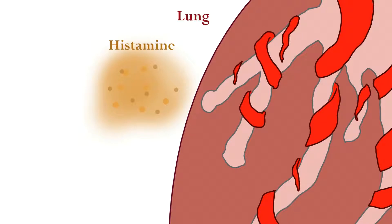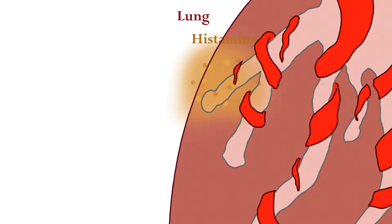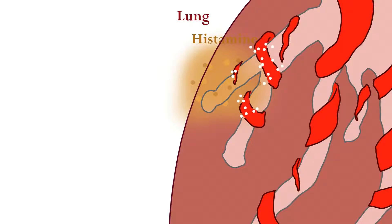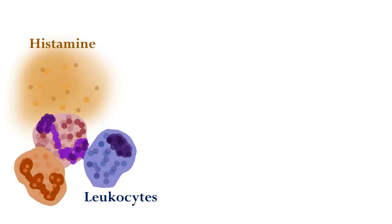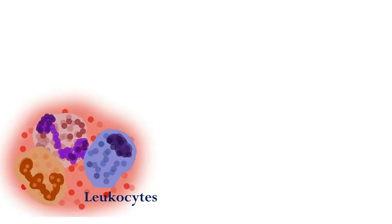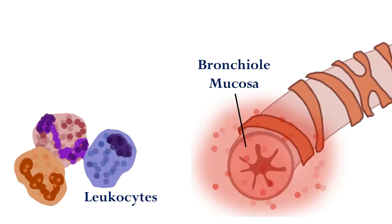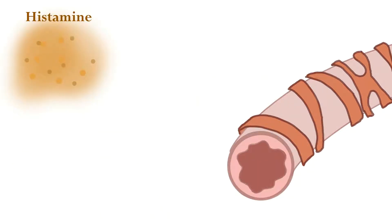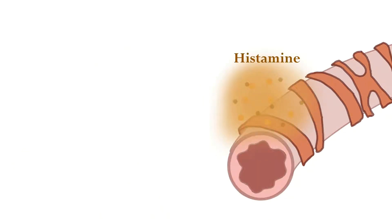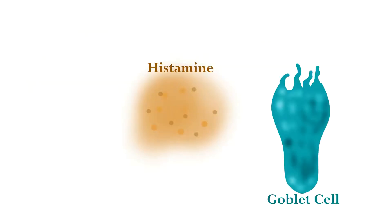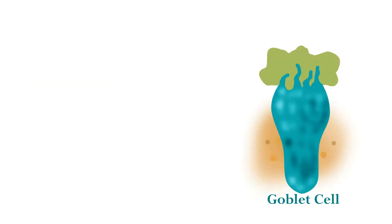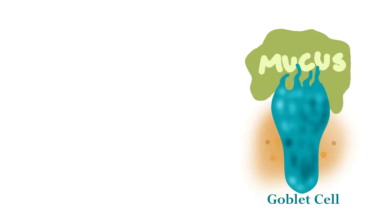This binding stimulates the mast cells to release a hormone protein called histamine. Histamine causes: one, nearby blood vessels to become more permeable, so more blood and leukocytes, including eosinophils, can enter the area to fight the allergen, but also causes swelling. Two, it triggers other leukocytes to release inflammatory chemicals, furthering the inflammation of the bronchial mucosa. Three, it directly causes contraction of the smooth muscle surrounding the airways, which narrows them. And four, histamine can trigger goblet cells to produce more mucus, contributing to the narrowing of airways.